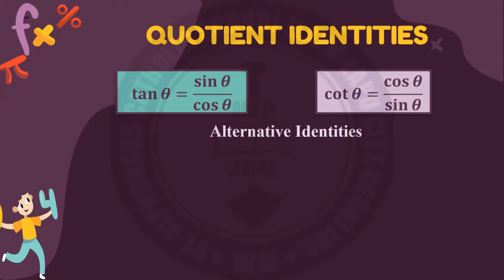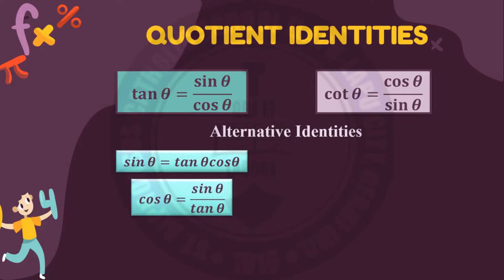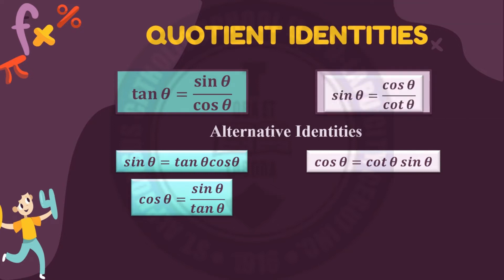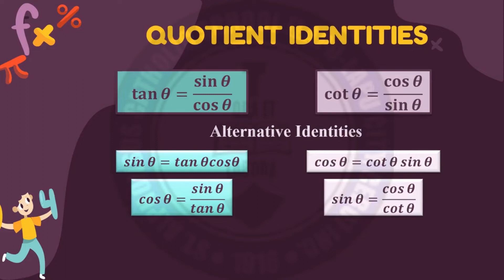Here are some alternative identities for quotient identities. Sine theta equals tangent theta times cos theta. Cosine theta equals cotangent theta times sine theta. And lastly, sine theta equals cosine theta over cotangent theta. This last pair of alternative identities are the alternative identities of cotangent theta equals cosine theta over sine theta.